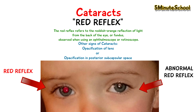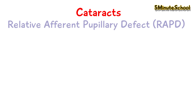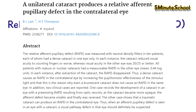The patient will also mention reduced visual acuity and reduced colour saturation. A relative afferent pupillary defect, or RAPD, will also be present if the cataract is preventing a significant amount of light entering the eye. This is a condition where the pupils respond differently to light stimuli shown on one eye at a time.